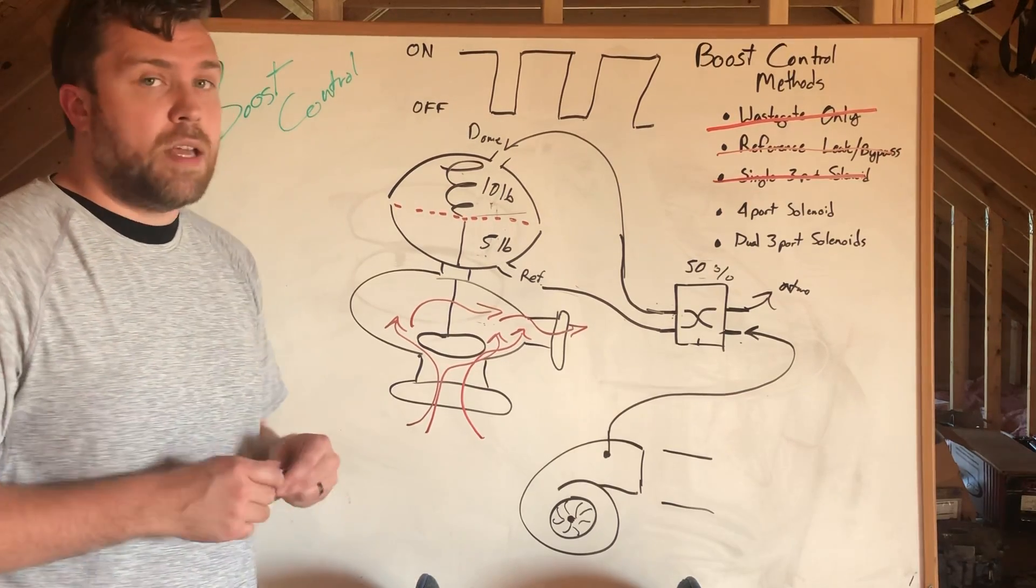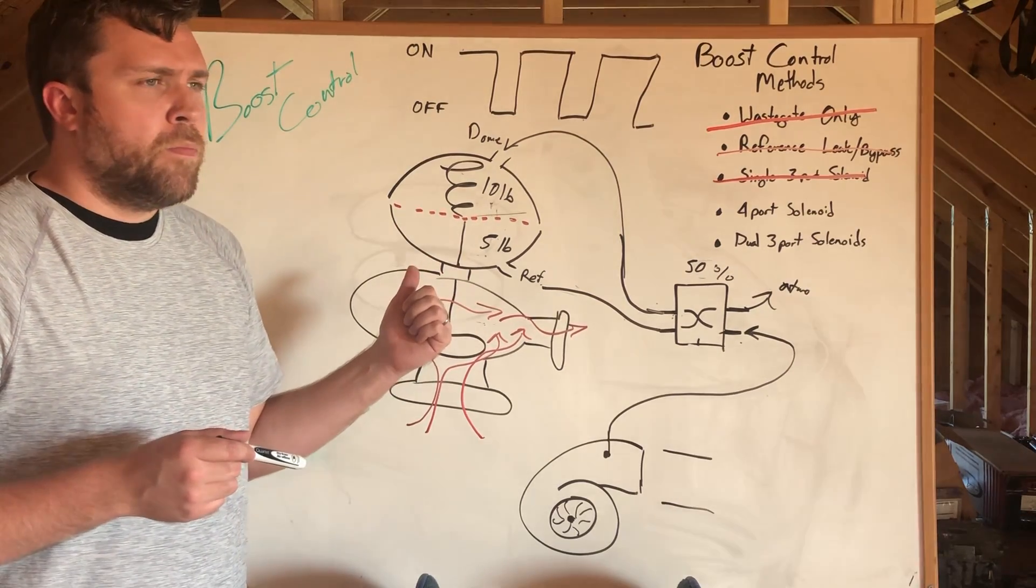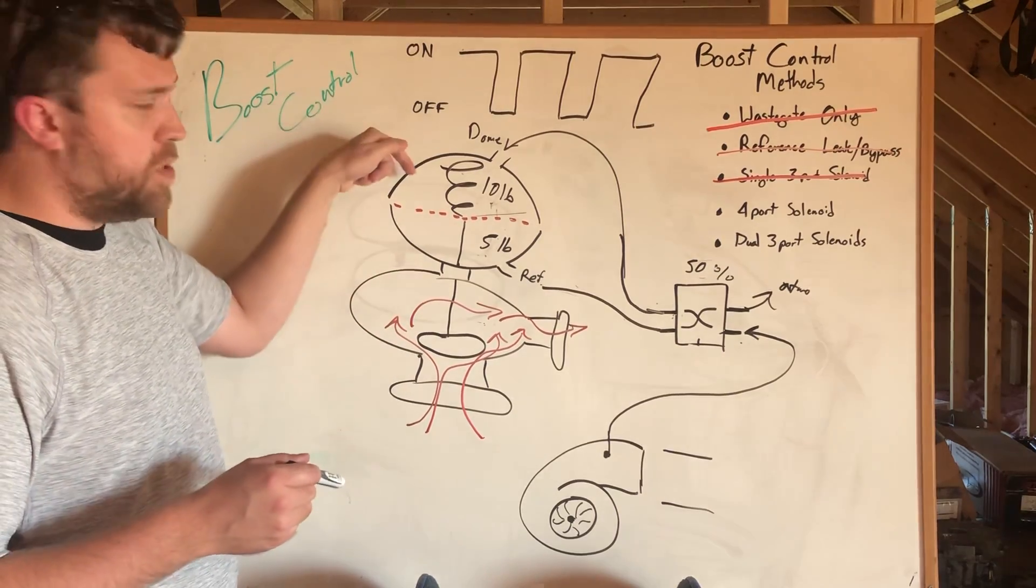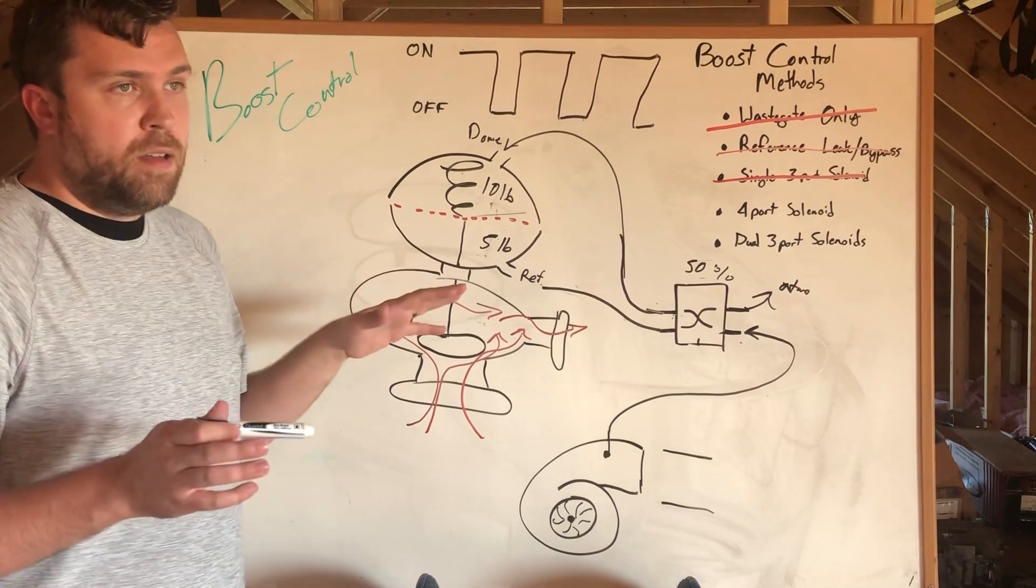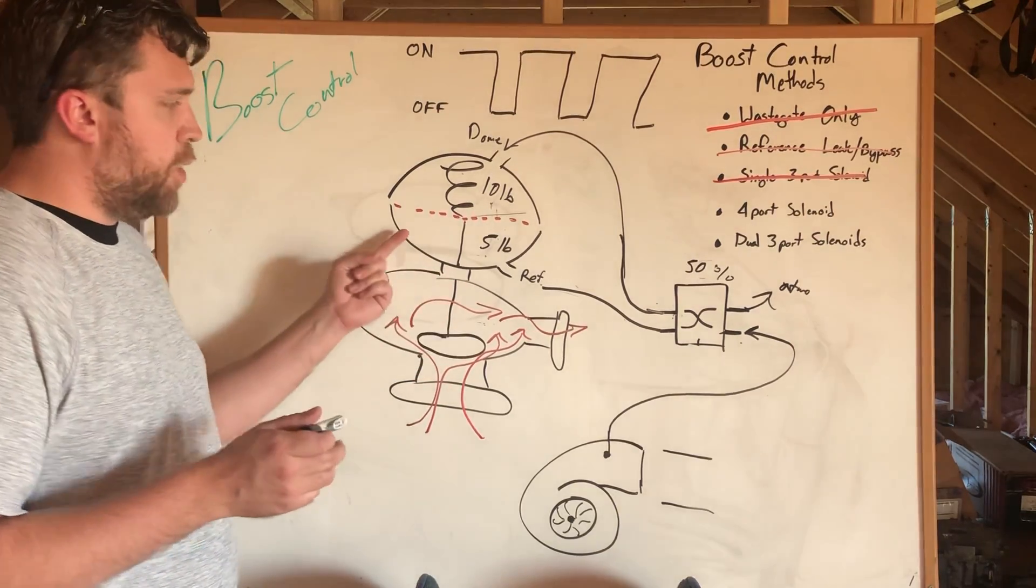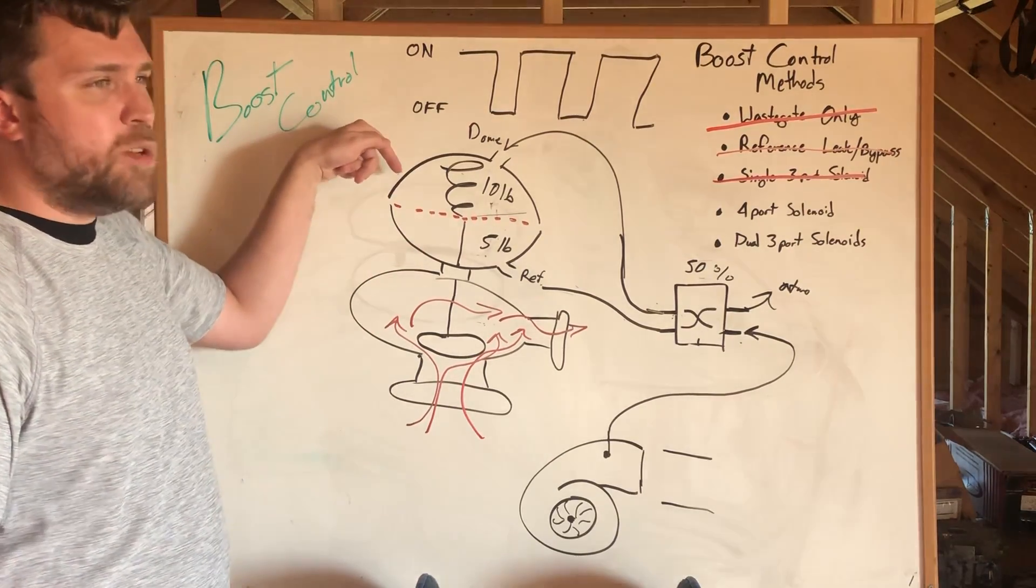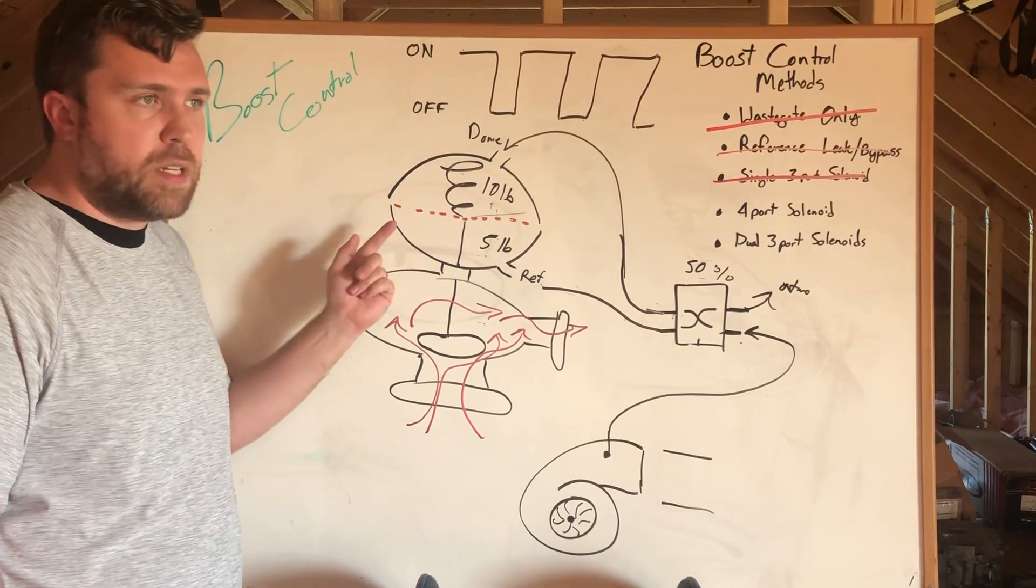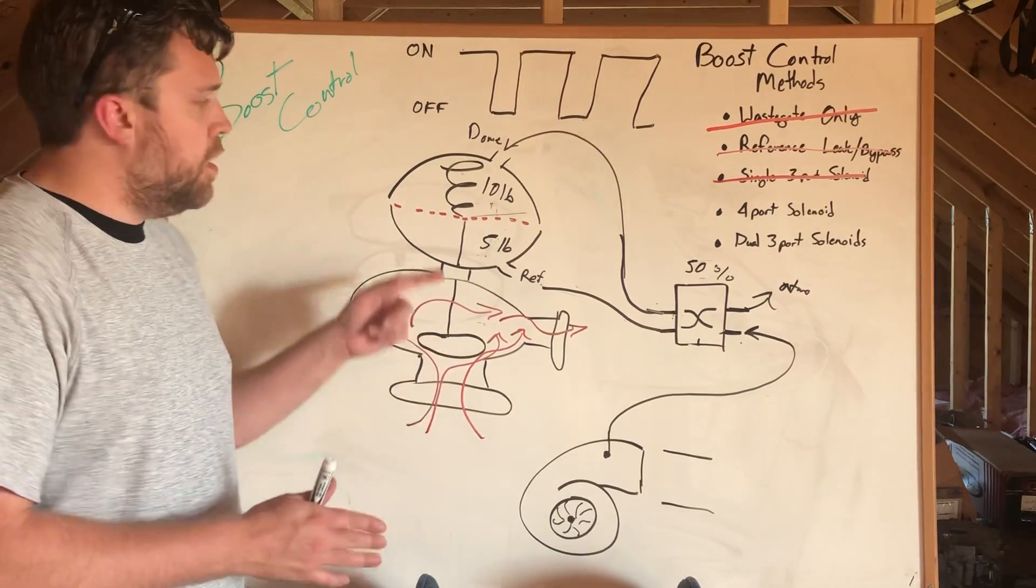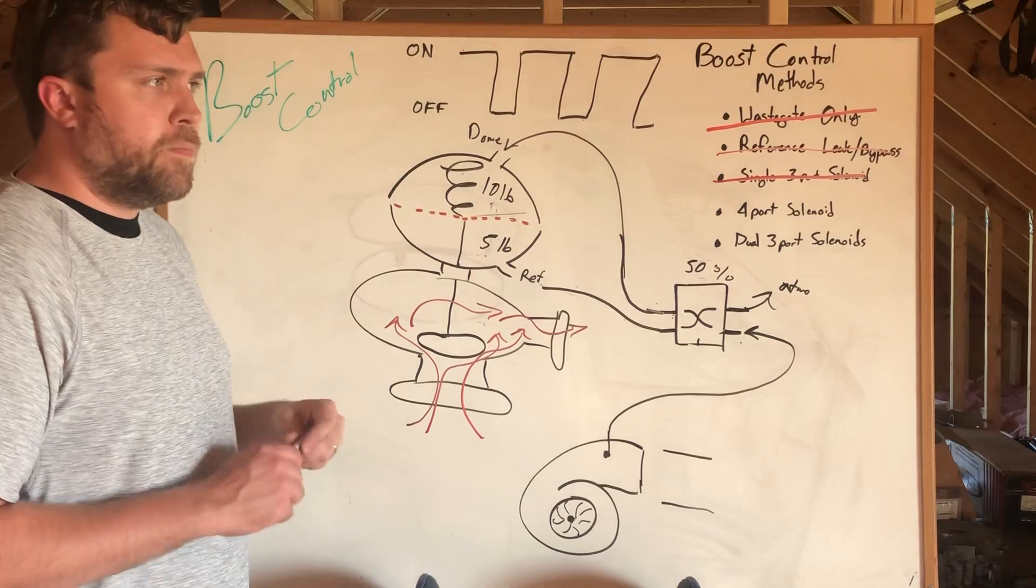The thing you have to remember is when you're running PID off of a dome sensor, the dome's great, it works well—it's just there's not a sensor in the reference side. The dome side somewhat assumes that the boost pressure is going to be on the reference side. When you start using a four-port, that's the reason you live in such small duty cycle ranges: you're losing reference, but the dome doesn't know that.